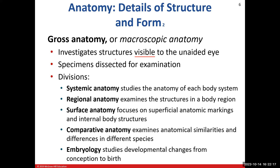Surface anatomy focuses on what we call superficial anatomic markings — things you can see on the surface, mainly on the skin. For example, the umbilicus, that's your belly button — that is part of superficial anatomy. We can use it to determine the location of other structures that might be internal. Same thing with the xiphoid process, which is the bottom portion of your sternum, and also the nipples — other than being superficial surface markings, they help us relate to other internal structures. Surface anatomy is very helpful when we need to learn the relation of certain internal body structures.